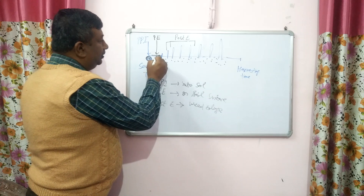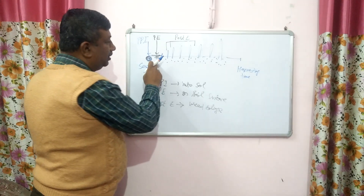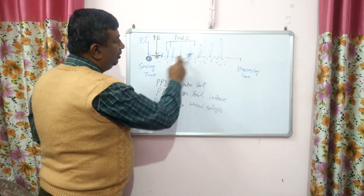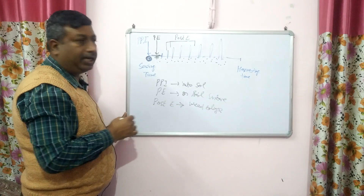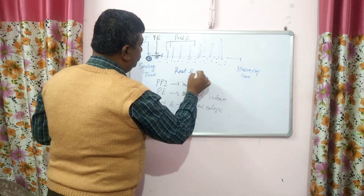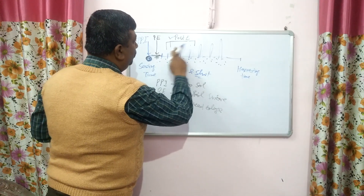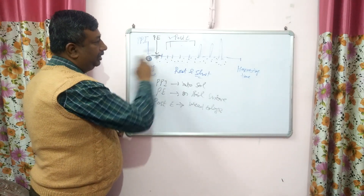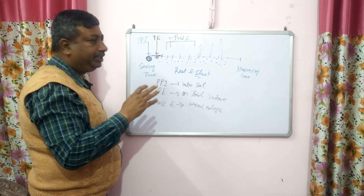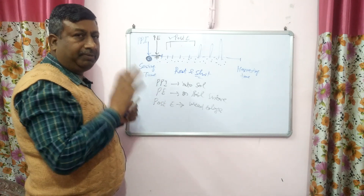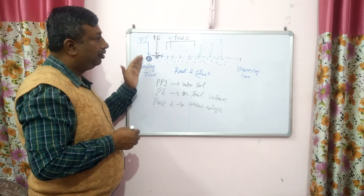When herbicides are in the soil, from day one they start their control. They control the emerging weeds, and post-emergence herbicides control the emerged weeds which have two, three, or four leaf stages. They affect the root and shoot growth, particularly shoot growth. Most common herbicides are post-emergence and they control weeds by damaging their foliage, making the field weed free so weeds do not compete with the crop.